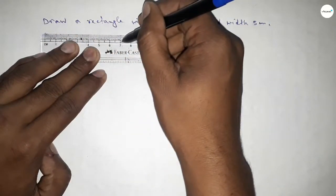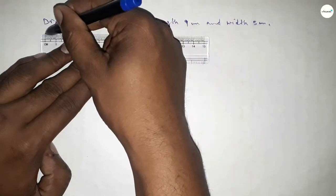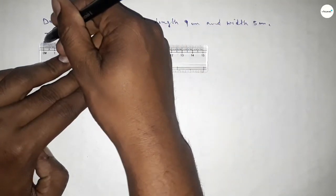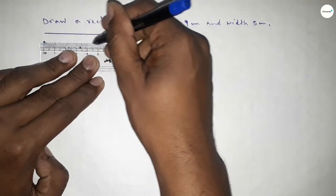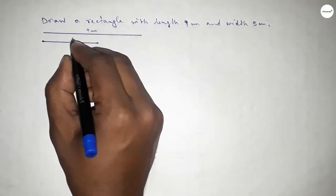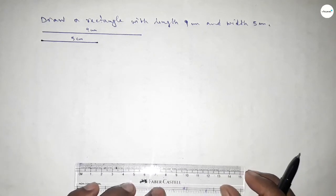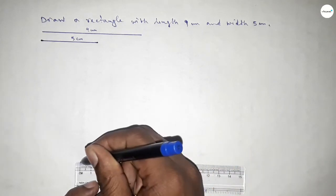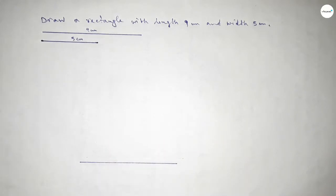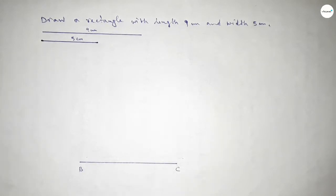First of all, we have to draw a line of length 9 centimeter. Then drawing another line of length 5 centimeter — 1, 2, 3, 4, 5. So this is the 5 centimeter line. This one is 9 centimeter and this side 5 centimeter. Now drawing a line of length 9 centimeter, taking point B and point C.